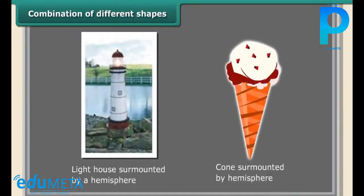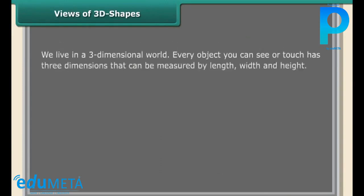Combination of different shapes: lighthouse surmounted by a hemisphere, cones surmounted by hemisphere. The above shapes are a combination of different shapes we use in our day-to-day life. Views of 3D shapes. We live in a three-dimensional world.